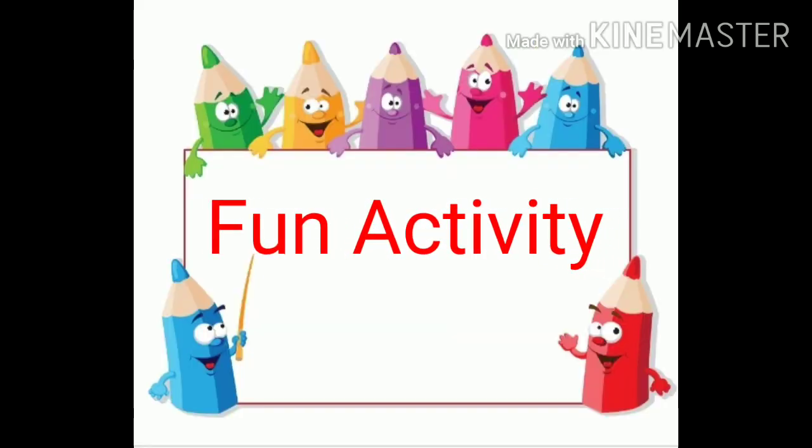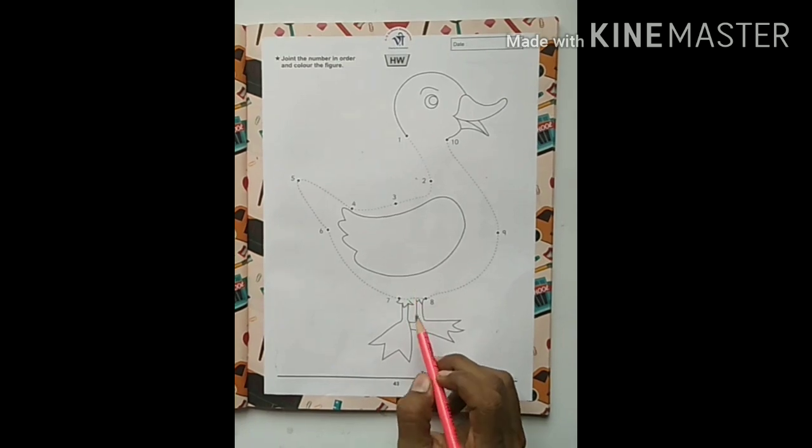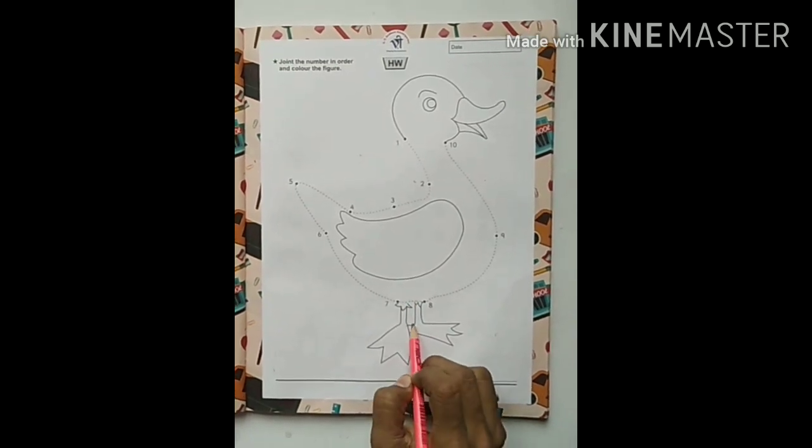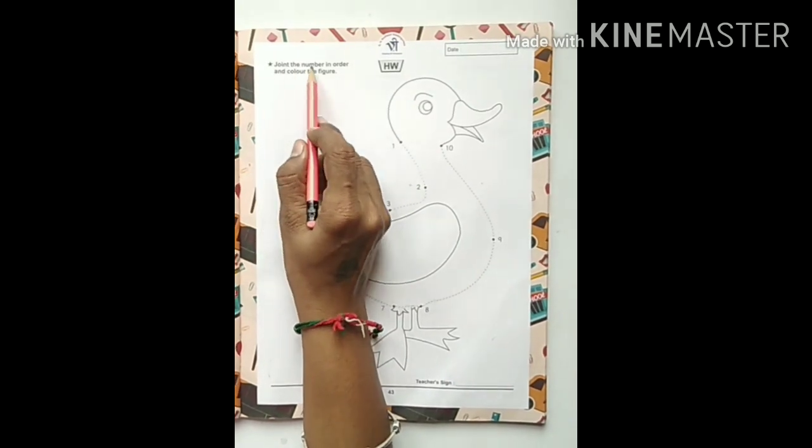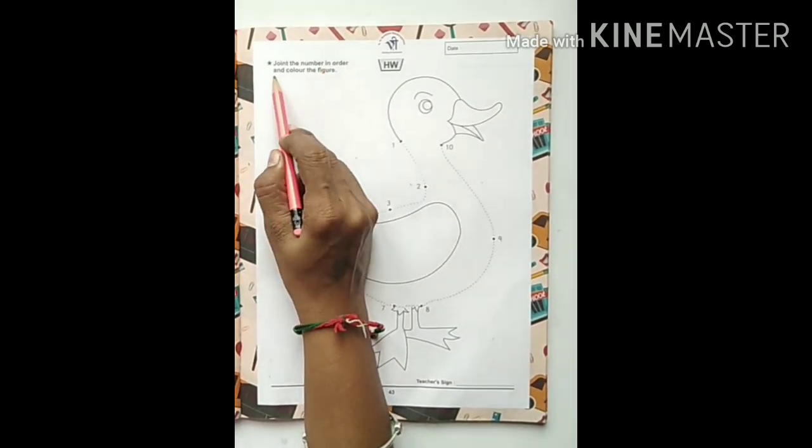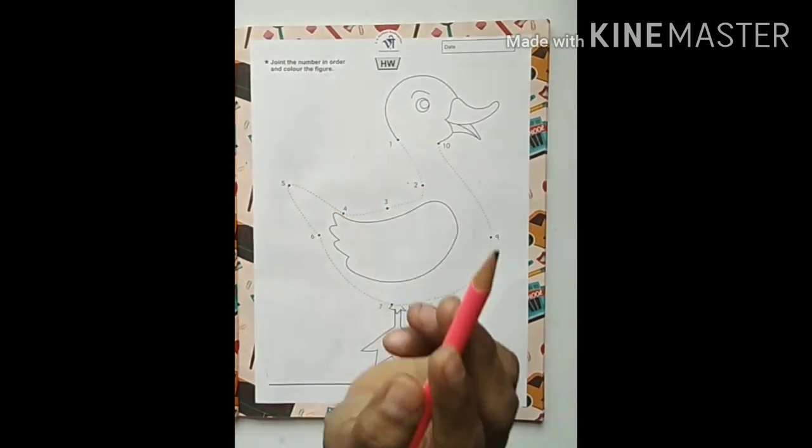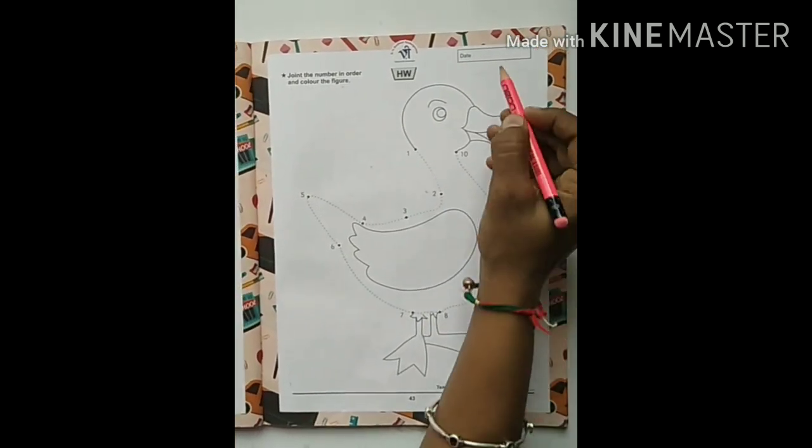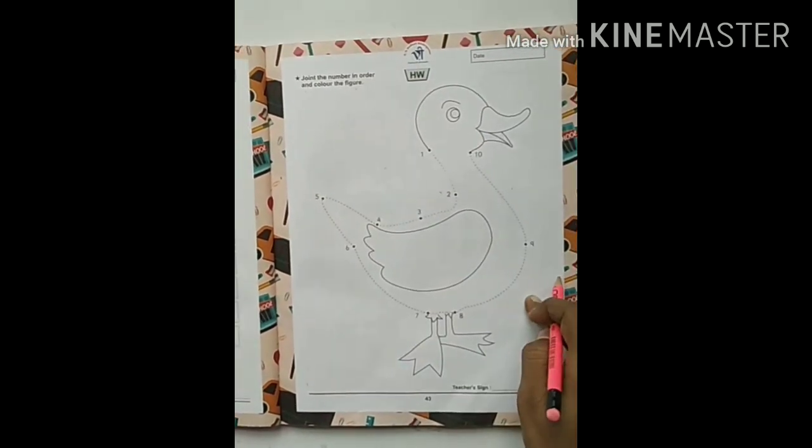Now you have to write 1 fun activity. Now in this box we have to write the date. In this picture, what you have to do?